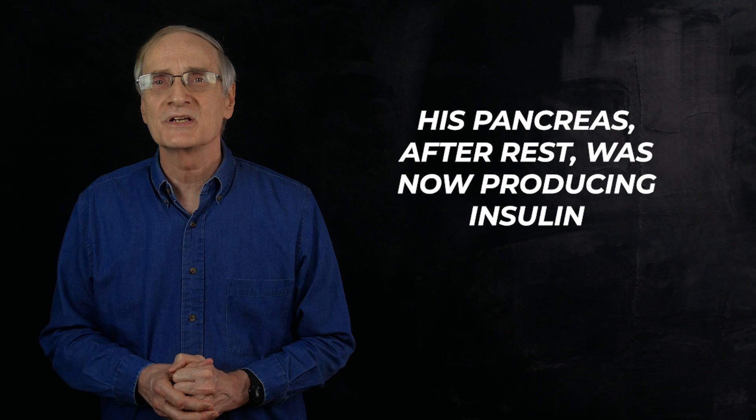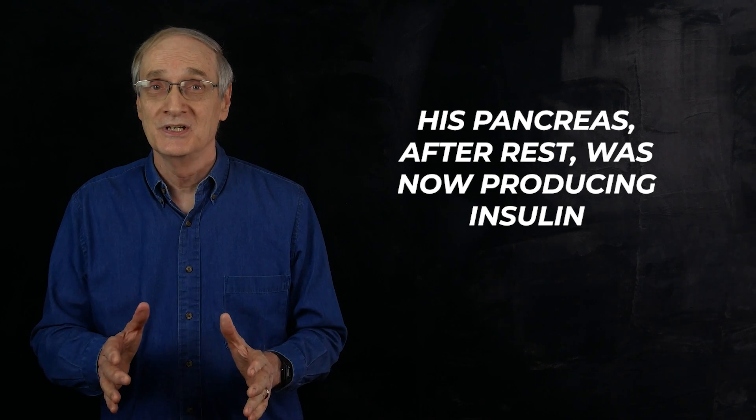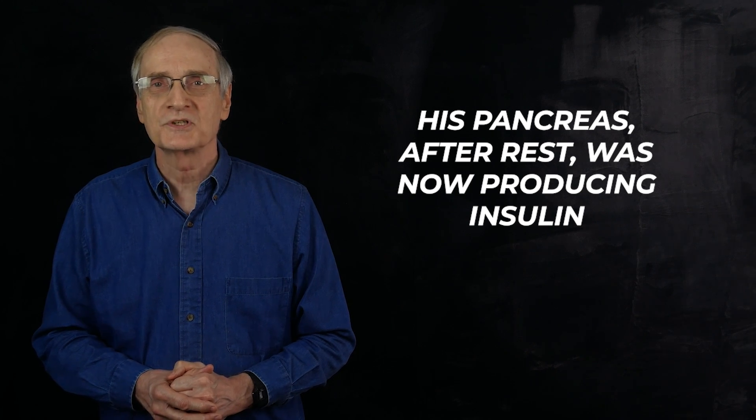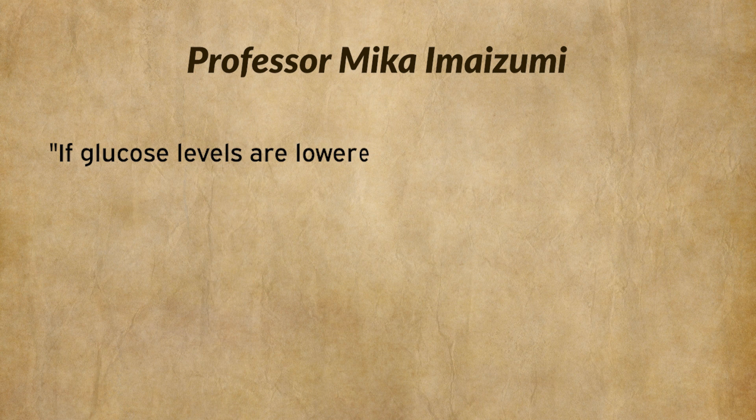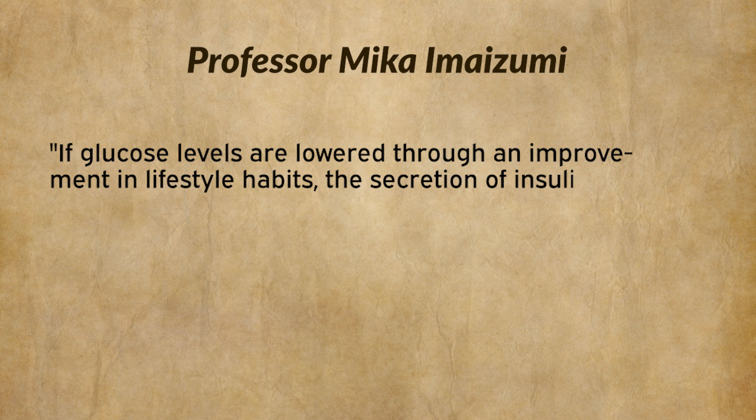They do show one encouraging little experiment done on a mouse in this documentary. They took a diabetic mouse and tested his pancreas, which showed he was producing little insulin. Then they gave him some medication daily to lower his glucose. After two months, they took another look at his tiny pancreas, and they found that he was looking 100% better in producing insulin in a normal fashion. They concluded that at least sometimes when you give your pancreas a rest, let me say it again, your pancreas a rest, those beta cells can somehow spring back to life again. Professor Mika Imazumi felt that this could work the same way in humans who stopped overloading their worn-out pancreases with eating too many carbs. He concluded, if glucose levels are lowered through an improvement in lifestyle habits, the secretion of insulin can be recovered, a healthy condition can be restored. An improvement in lifestyle habits. Amen to that.